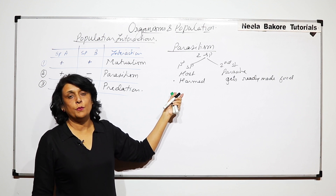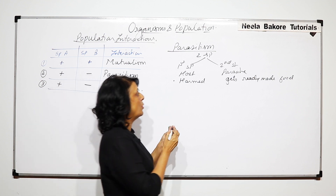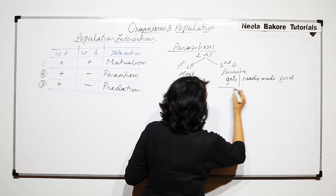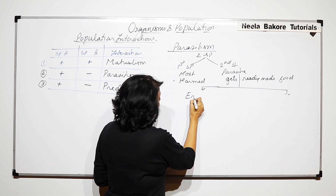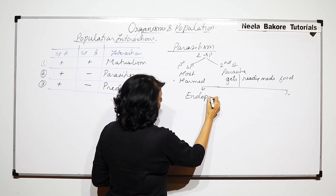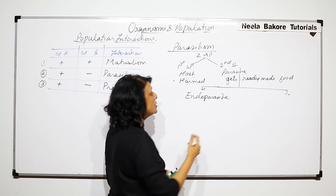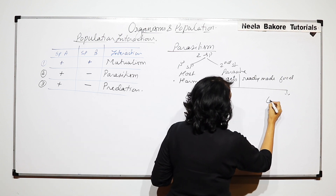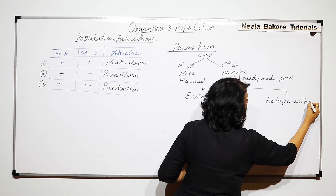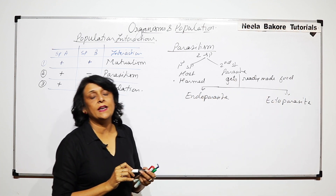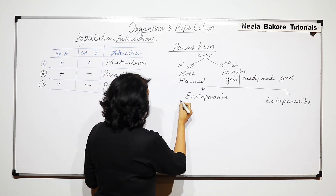These parasites can be of two types depending upon where in the body of the host they are found — whether inside or outside the body. We categorize them as endoparasites, which are found inside the host, and ectoparasites, which remain on the body of the host and keep absorbing nourishment.